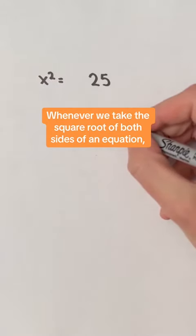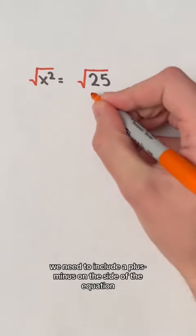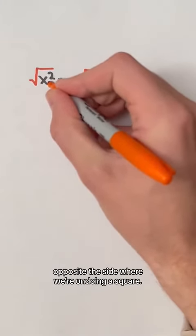Whenever we take the square root of both sides of an equation, like x squared equals 25, we need to include a plus minus on the side of the equation opposite the side where we're undoing a square.